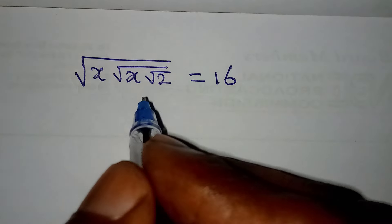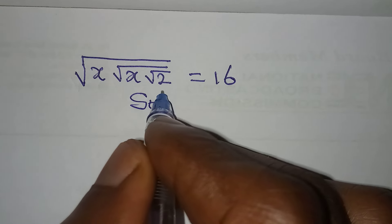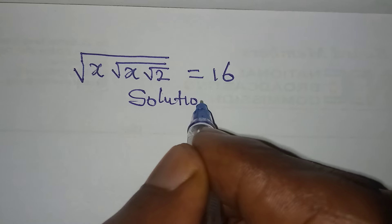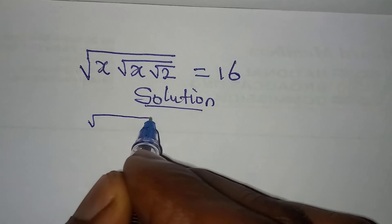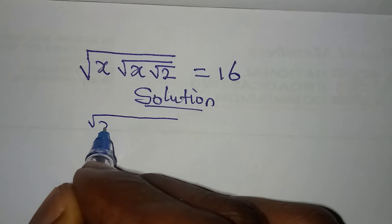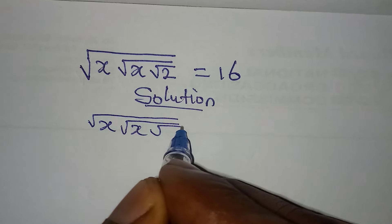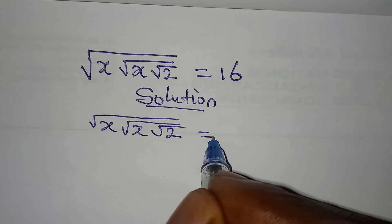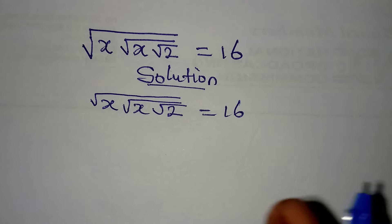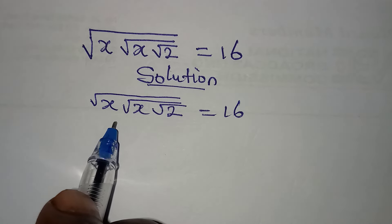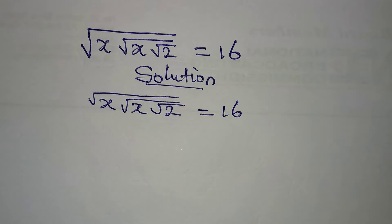Hello everyone, let's provide the solution to this problem. We have the square root of x times the square root of x times the square root of 2, equal to 16. We are trying to look for the value of x that we'll put in here to give us 16.